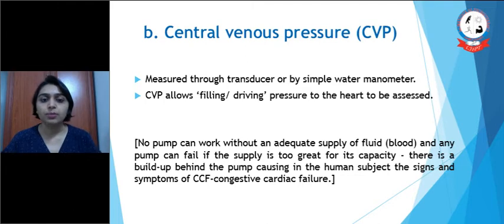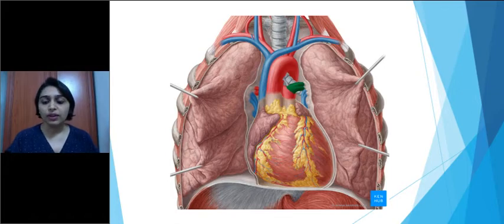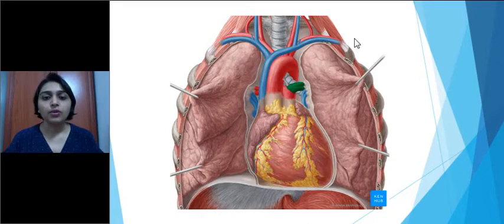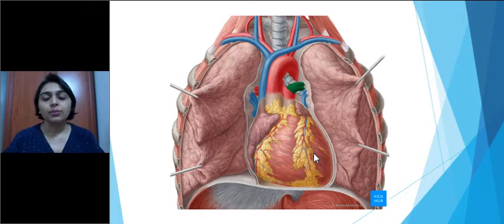Next is central venous pressure, CVP, measured through transducer or simply by water manometer. CVP allows the filling or driving pressure to the heart to be assessed. By the help of CVP, we can get to know how much amount of blood is getting into the right side of the heart, so that the heart is going to pump forward as cardiac output to the lungs. If the CVP is low, we can get to know the preload of the heart is low. The anatomy shows the superior vena cava draining blood into the right atrium, then into the right ventricle, from where blood goes through the pulmonary trunk to the right and left lungs, and from there the oxygenated blood comes back to the left atrium, then to the left ventricle and into systemic circulation through the aorta.